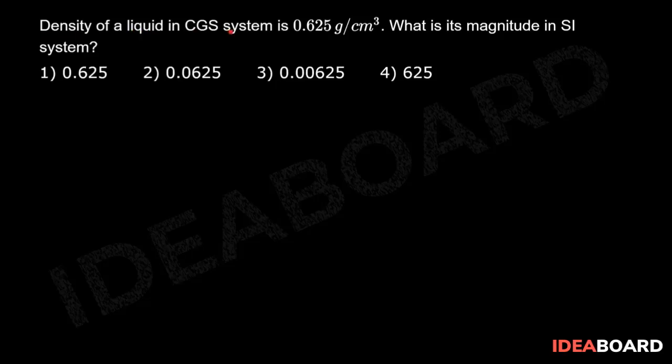Density of a liquid in CGS system is 0.625 gram per centimeter cube. What is its magnitude in SI system?